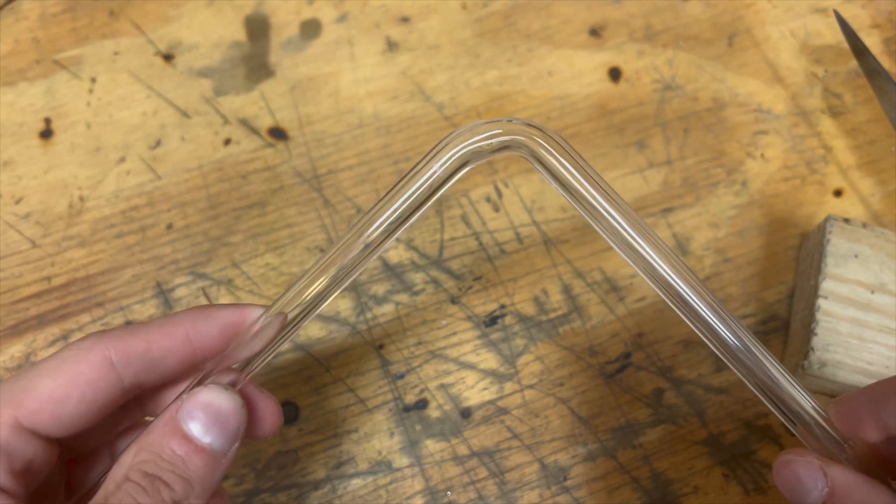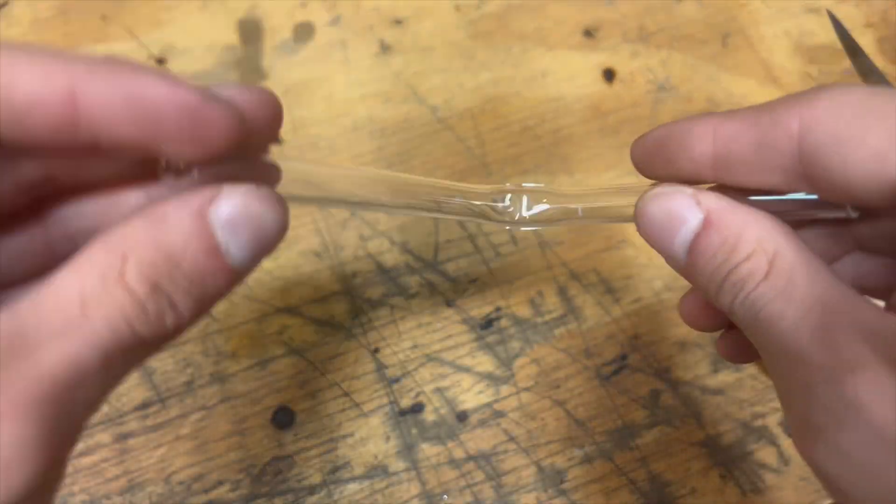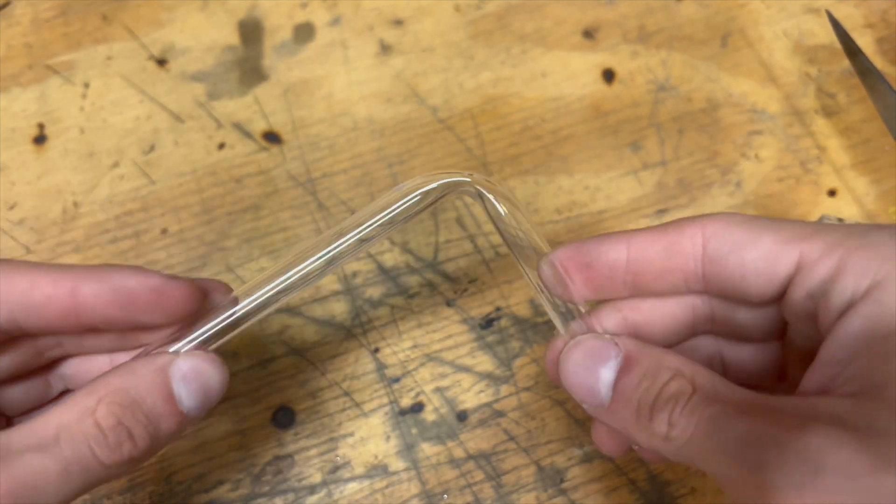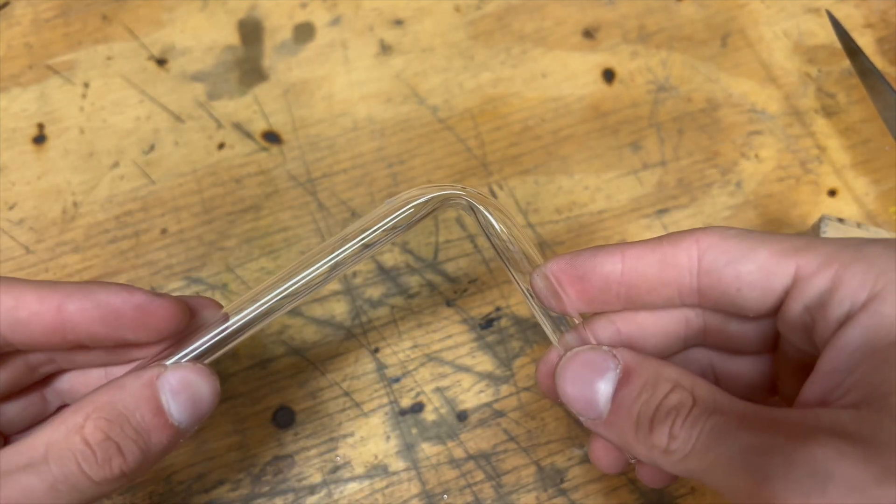But if you heat it too little, it'll just constrict the tubing and your outer diameter won't be the same as it is when it started. Your inner diameter will be all messed up, your wall thickness will be messed up, and it won't even look good.